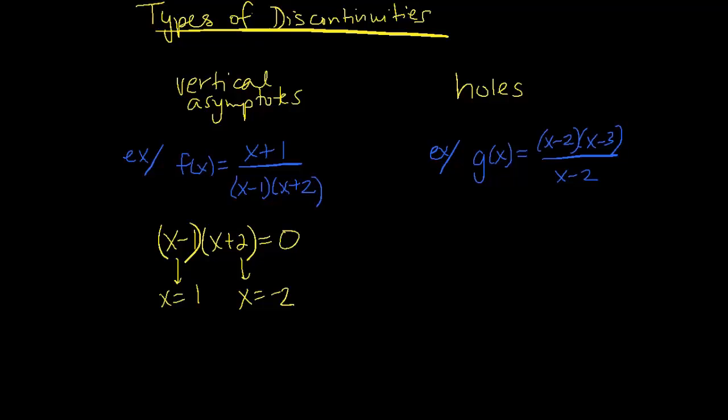So notice what happens if I substitute 1 into f of x. I would get something like 2 over 0, which is undefined. But if I actually substituted in values that were close to 1, like .9, and I'm just going to use my calculator to evaluate that, I get negative 6.552. And then if I went with .91, now I'm at negative 7.293. You can kind of see that you're going to approach negative infinity.